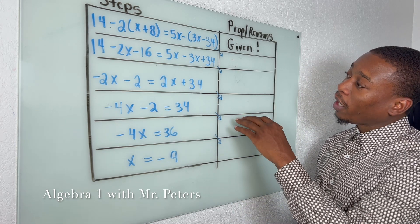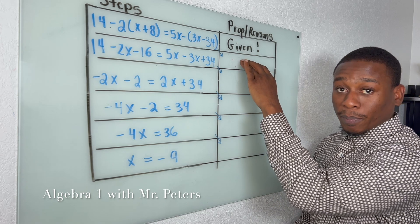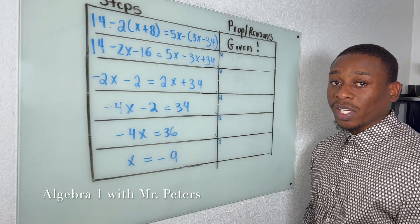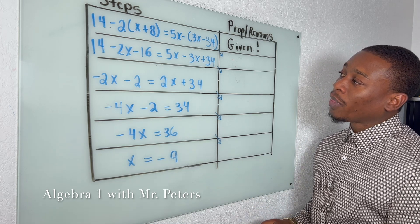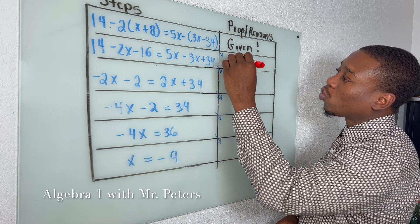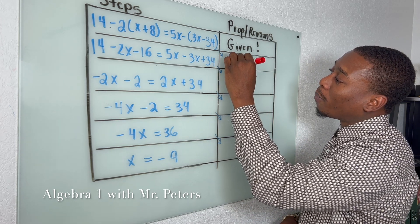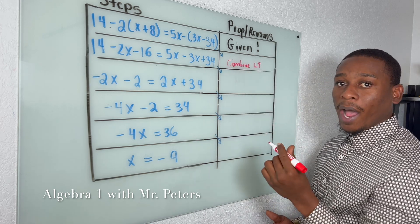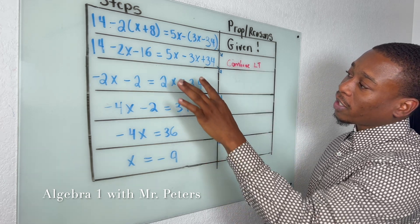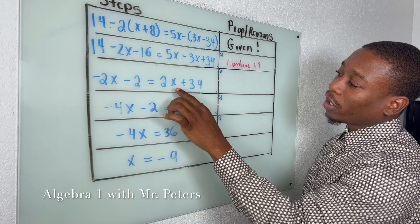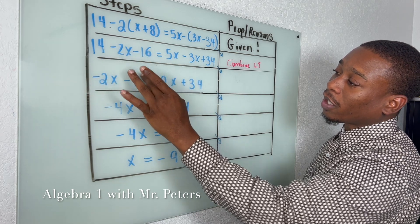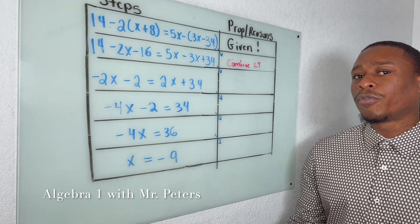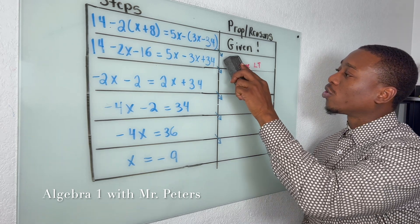A common error I see is students are either one step ahead or one step behind for listing their reasons. A lot of students will put something like 'combine like terms' at this step because they see that we combined five and three to get to 14 and negative 16 to get negative two. But unfortunately, that is wrong.